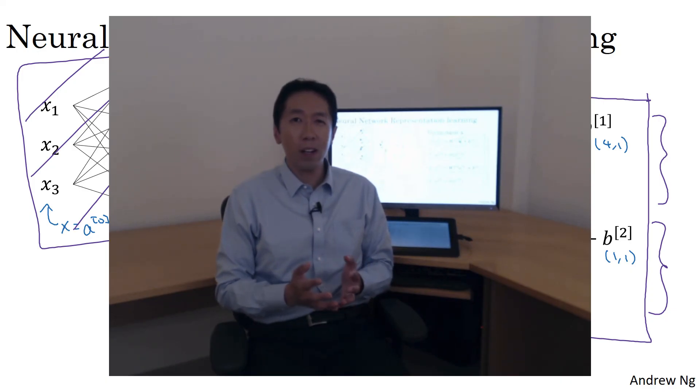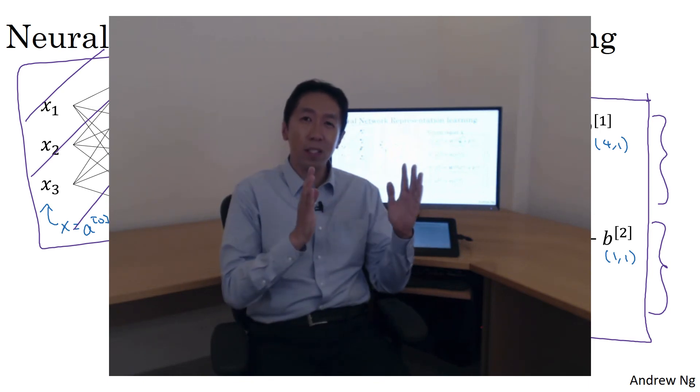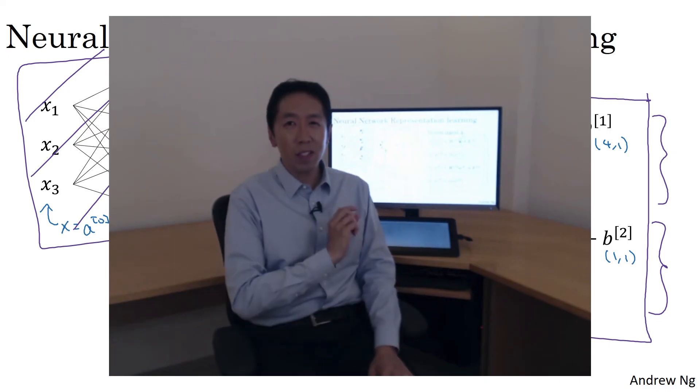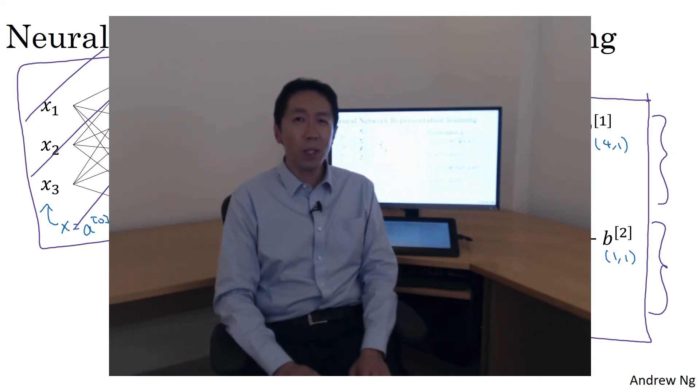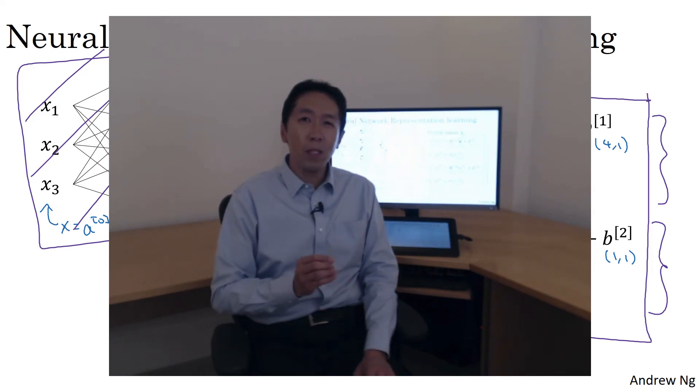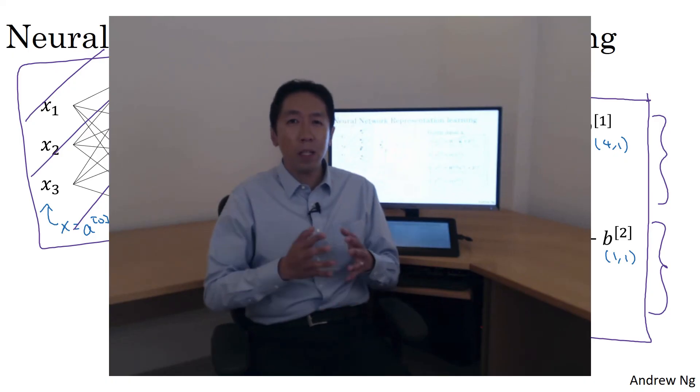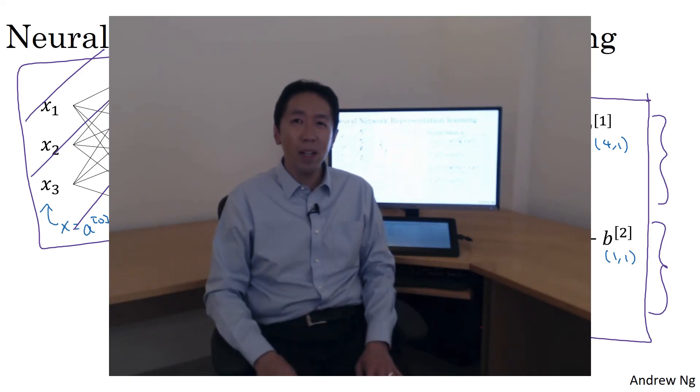Similar to what we did for logistic regression, we'll also want to vectorize across multiple training examples. And we'll see that by stacking up training examples in different columns in the matrix, with just slight modification to this, you also, similar to what you saw in logistic regression, be able to compute the output of this neural network, not just on one example at a time, but on your, say your entire training set at a time. So let's see the details of that in the next video.